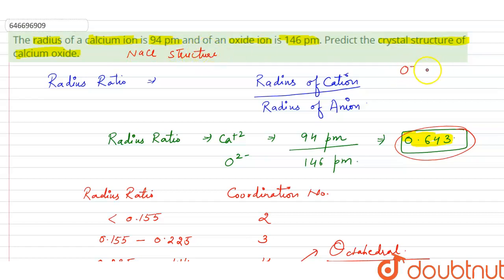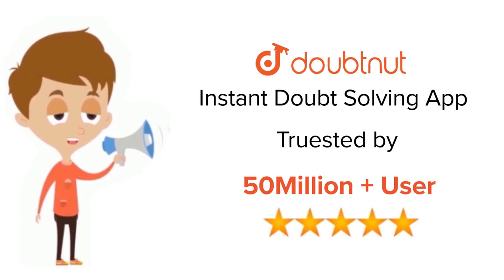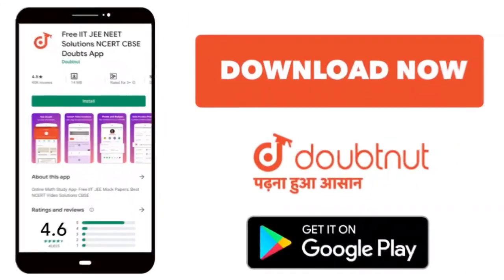In which O²⁻ occupies FCC and Ca²⁺ occupies octahedral voids. Thank you. For class 6 to 12, IIT-JEE and NEET level, trusted by more than 5 crore students, download Doubtnut app today.